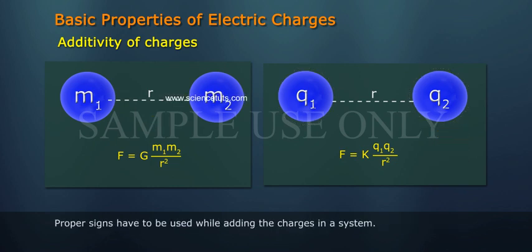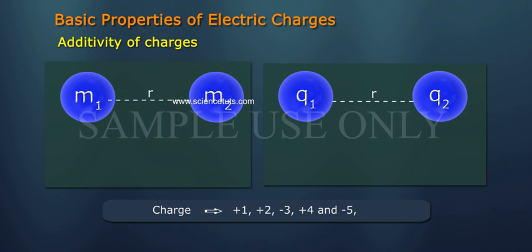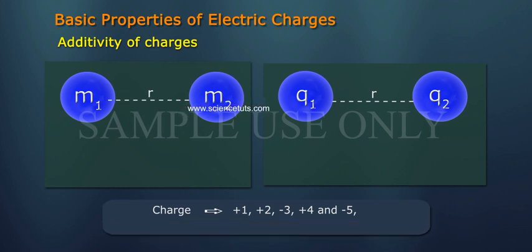Proper signs have to be used while adding the charges in a system. For example, the total charge of a system containing five charges plus 1, plus 2, minus 3, plus 4, and minus 5 in some arbitrary unit is calculated as follows: